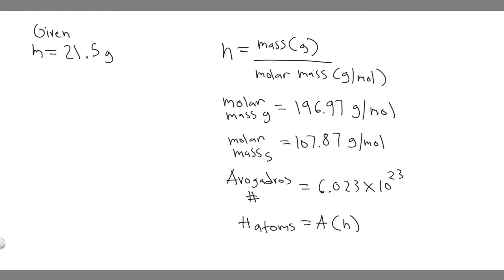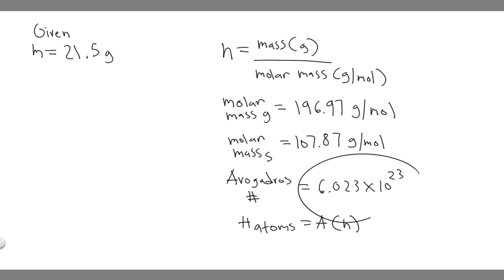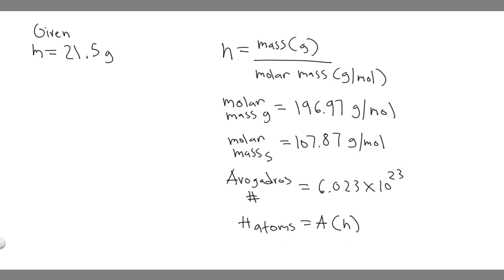There's another thing you need to know if you want to find the number of atoms, because we want atoms, not number of moles. So you're just going to take Avogadro's number — 6.023 times 10 to the 23 — multiplied by the number of moles that we find. That's going to give us the number of atoms.